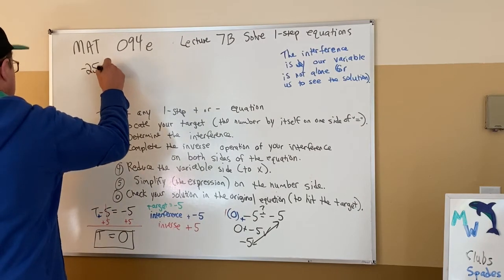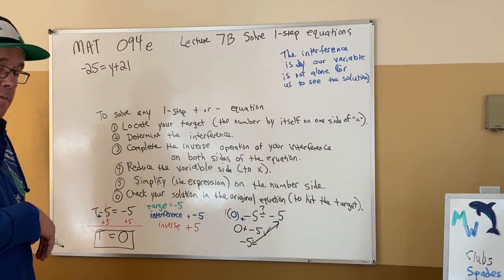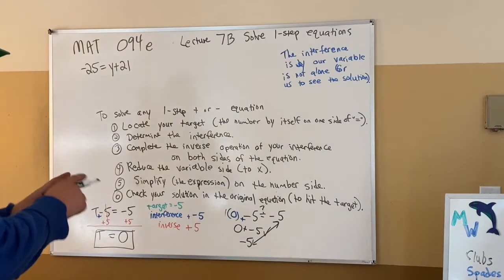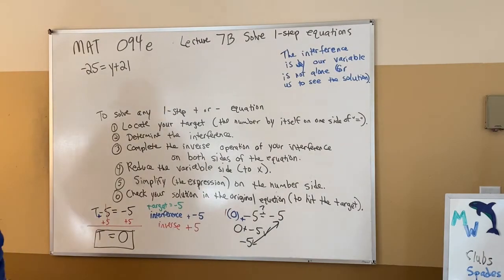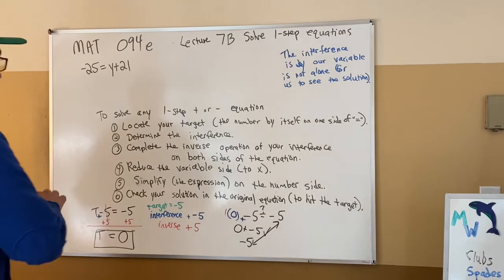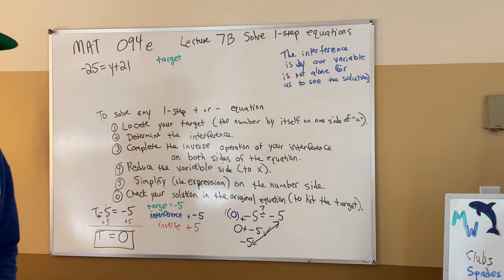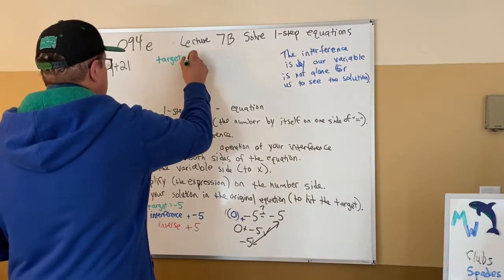Negative 25 = y + 21. Is this exactly the same as the others with y as a letter and bigger numbers? No. Is it solved the same way? Yes. Understanding what we've got to do means we've got to find the target. The target is the number that doesn't have x on its side — it's just a number sitting by itself. I never said which side it's on. The target here is negative 25.